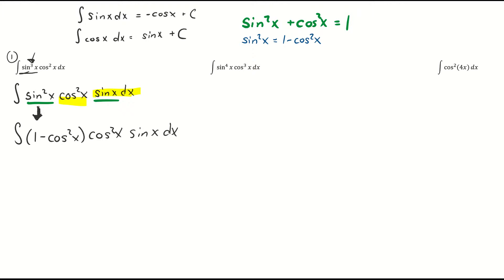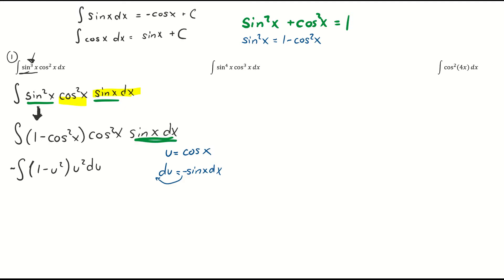Now I'll do my u-substitution. I let u equal cosine x, which means du equals negative sine x dx. I deal with that negative one by moving it out front and make my substitution. I end up with negative integral of 1 minus u squared times u squared du. It cleans up nicely — this was my du, and I put in my u. Now I multiply through to get negative of u squared minus u to the fourth du.